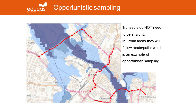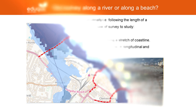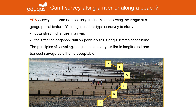This is an example of opportunistic sampling. I have been asked if teachers can survey along a river or along a beach rather than across a feature, and the answer is yes. Survey lines can be used longitudinally — i.e. following the length of a geographical feature. Typical examples would be to look at downstream changes along a river, or along the length of a shoreline, looking at the effect of longshore drift on pebble sizes. The principles of sampling along a line are very similar whether it's a transect across a feature or down the length of a feature, and so either approach is acceptable.